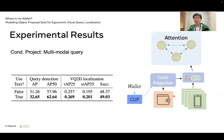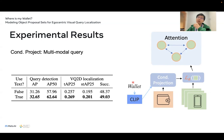Another advantage of the conditional projection layer is that the model can take in multimodal information as input. This means we can let the AI agent know we are looking for a wallet via text, and the textual information is also helpful across all tasks.